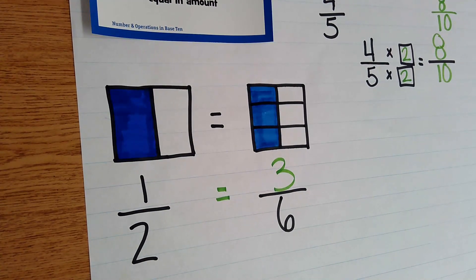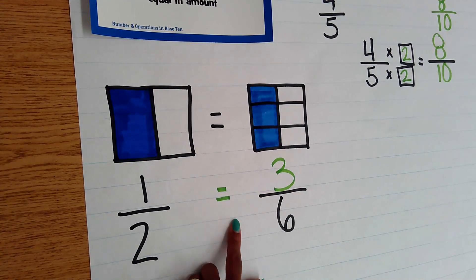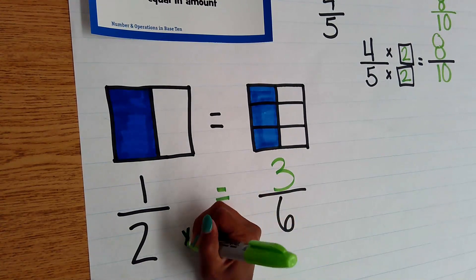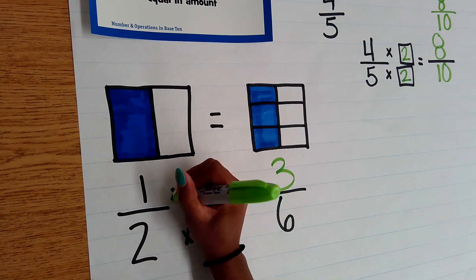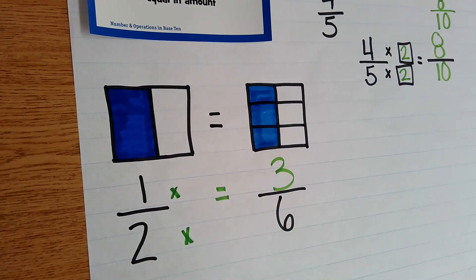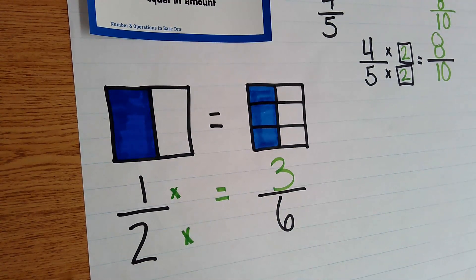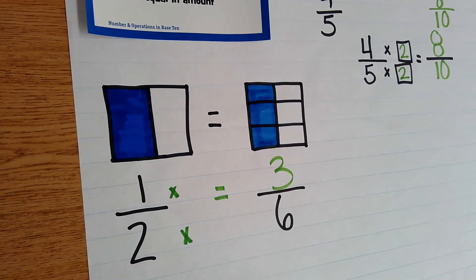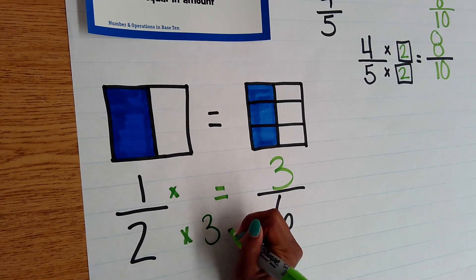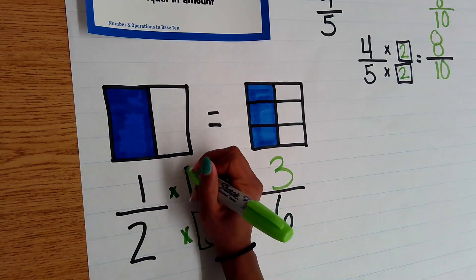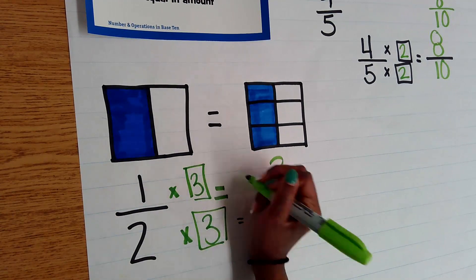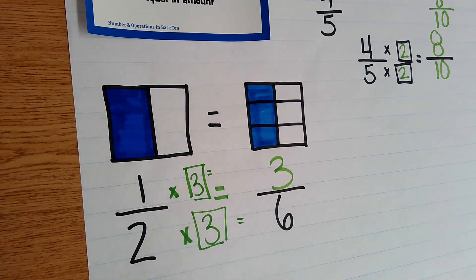I'm also going to think about the same thing. Two times what gave me that six? And it has to work for the top, because to get an equivalent fraction, you multiply your numerator and denominator by the same number. So I know that two times three equals six, and I know that one times three equals three. So one half is equal to three sixths.